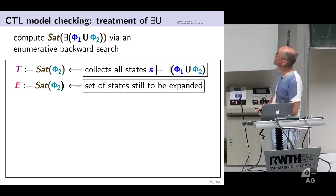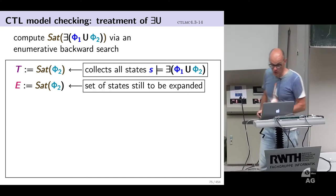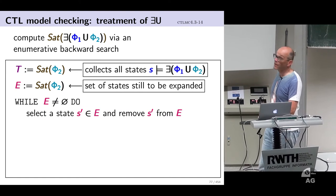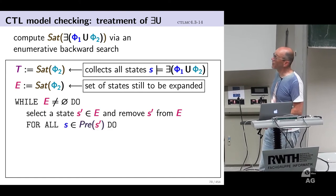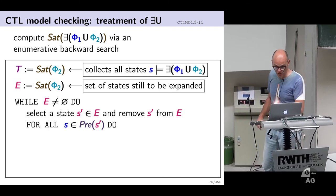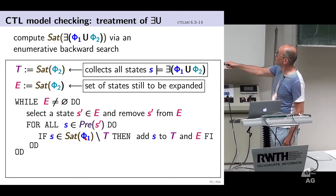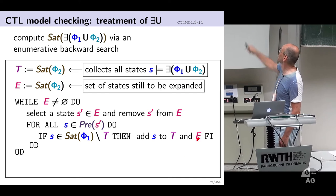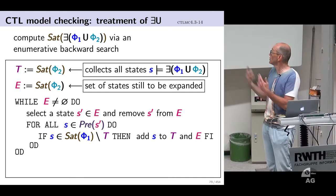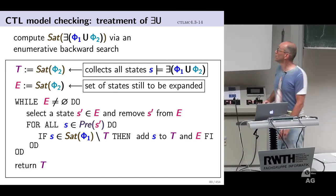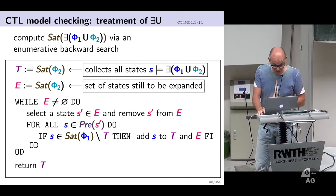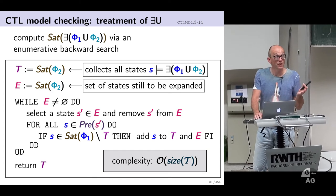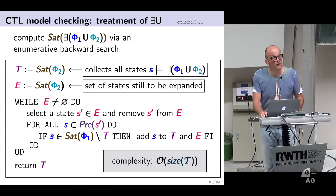In pseudocode for existential until: start with all phi2 states in set E. As long as E is non-empty, select a state and remove it. For all its direct predecessors: if the predecessor is a phi1 state not yet in T, add it to T and also to E, because predecessors of the newly added state may also satisfy the formula. Return T. The complexity of this algorithm is linear in the size of the transition system — worst case you consider all states and all edges.